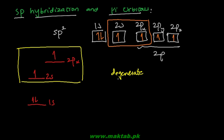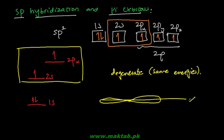Degenerate means having the same energies — equal energies. Because the shapes are different: 2px is a dumbbell along the x-axis, and 2s is a sphere. Once these two orbitals combine together, the two new orbitals won't be those shapes. Rather they would have a new shape — one lobe on one side and another lobe on the other.